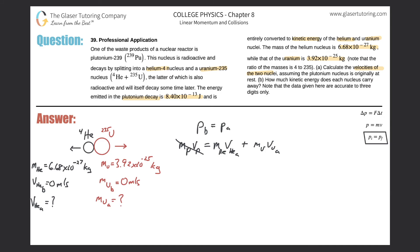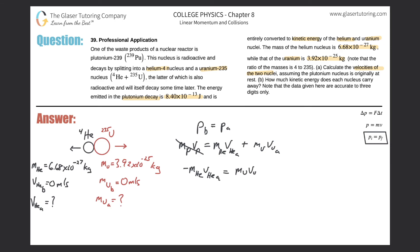What I'm going to do is bring this term over to the left-hand side, so that we can see that the momentum of helium will be equal to the momentum of the uranium nucleus after the decay, but just opposite in sign.